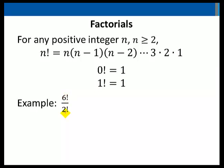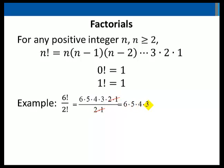For example, let's simplify 6 factorial over 2 factorial. 6 factorial is 6 times 5 times 4 times 3 times 2 times 1, and 2 factorial is 2 times 1, so this simplifies to 6 times 5 times 4 times 3, which is equal to 360.